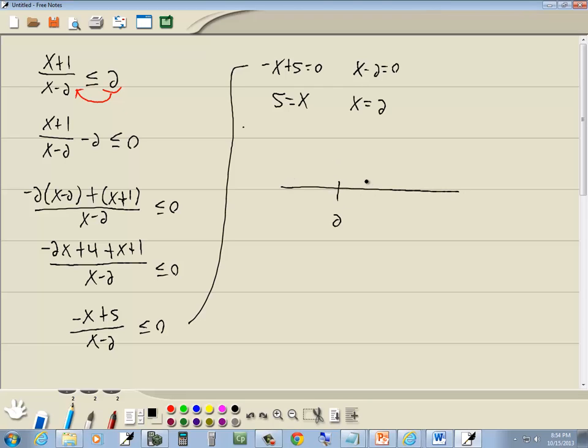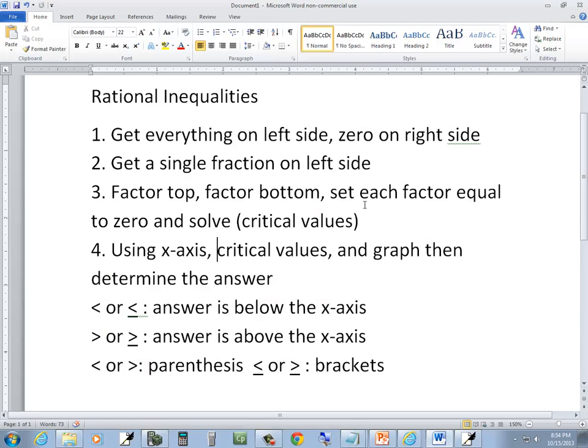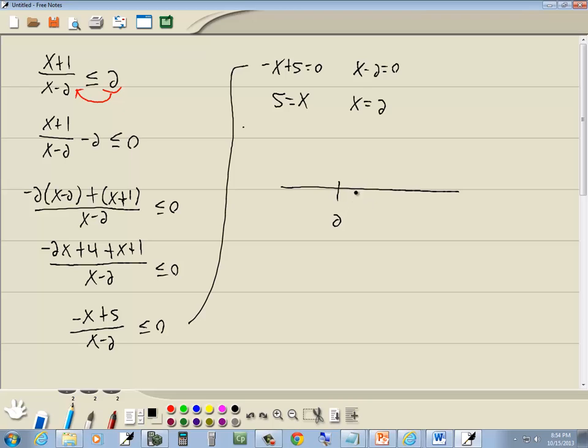Now here's our x-axis, step 4. Using x-axis, critical values, and graph then determine the answer. So here's 2 and here's 5. Go over here is negative infinity. Go over here is positive infinity. Again, these split them into intervals.